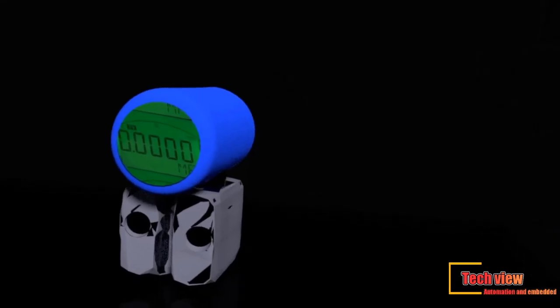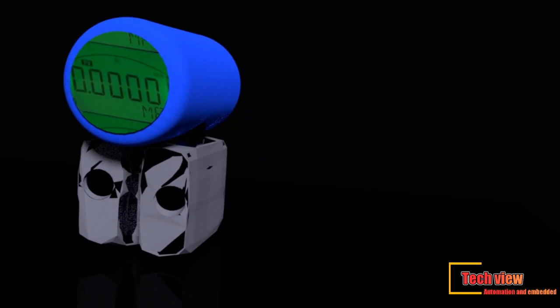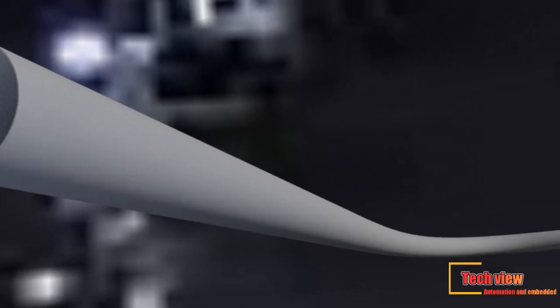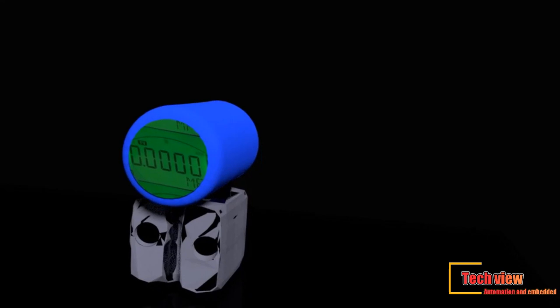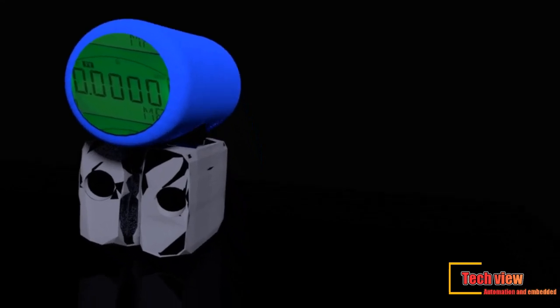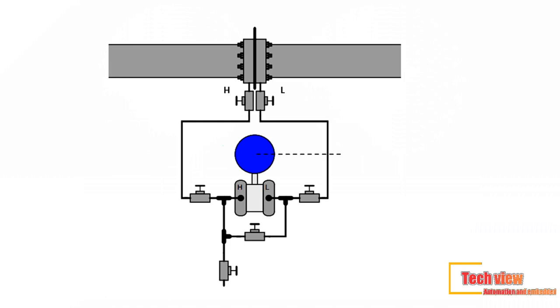Differential pressure flow meters use Bernoulli's equation to measure the flow of fluid in a pipe. They introduce a constriction in the pipe that creates a pressure drop across the flow meter. When the flow increases, more pressure drop is created. Impulse piping routes the upstream and downstream pressures of the flow meter to the transmitter that measures the differential pressure to determine the fluid flow. This technology accounts for about 21% of the world market for flow meters.